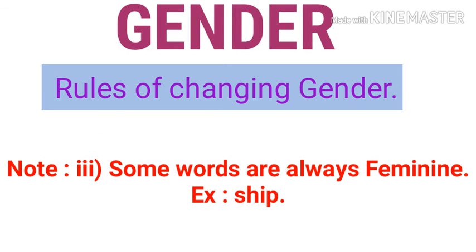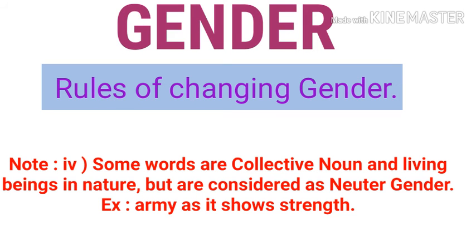There are certain words which are always used in the feminine gender, like the word 'sheep'. We say 'the sheep has lost all her boats in the storm' — we never use 'his'. Also, certain collective nouns that denote living beings are considered neuter gender. For example, 'army' is a word that denotes neuter gender — it doesn't show whether it is masculine or feminine.